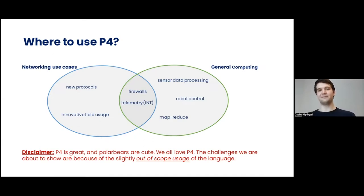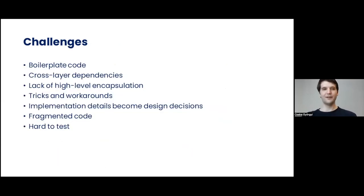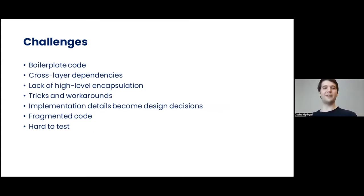These are usually use cases that can benefit from high throughput and/or low latency — for example, sensor data processing or robot control. But since P4 wasn't really meant to describe such high-level tasks, the implementation process for these projects might be difficult. We've collected a list of challenges the programmer might face: we still need to implement and maintain the underlying protocols, we cannot comfortably encapsulate high-level data structures, and we might want to reuse them later. Moreover, these use cases are usually stretching the boundaries of the underlying devices.